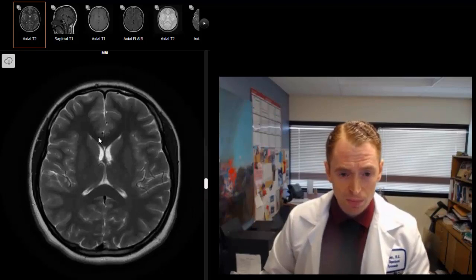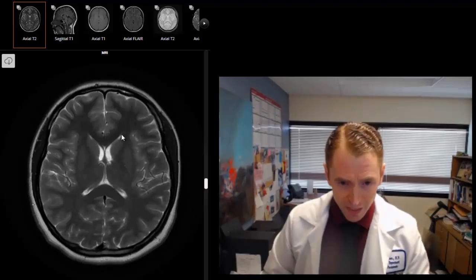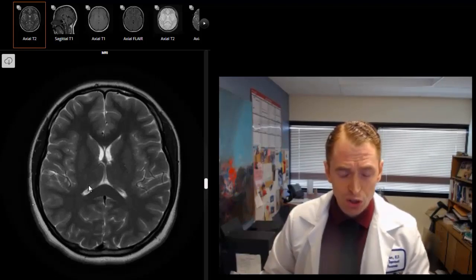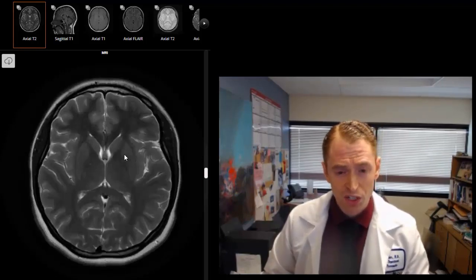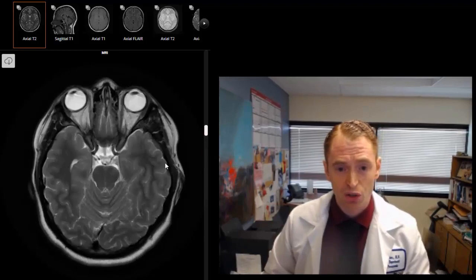These are the fluid-filled spaces called ventricles. The cerebrospinal fluid functions to support the brain, provide nutrition and transport of various nutrients and amino acids and neurotransmitters.